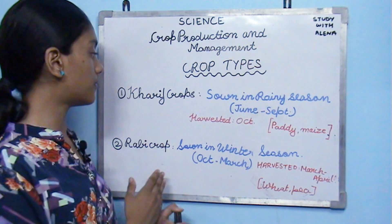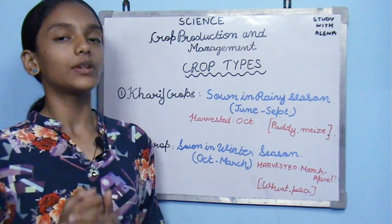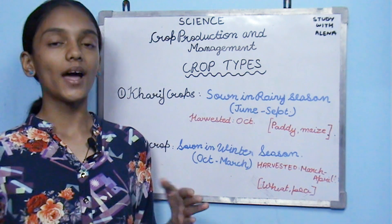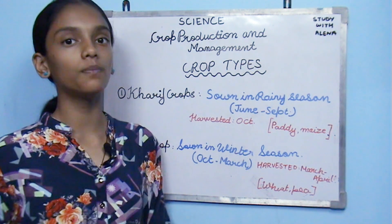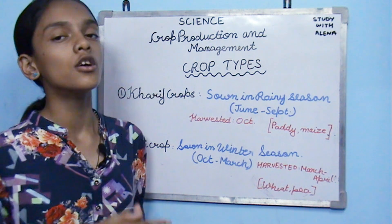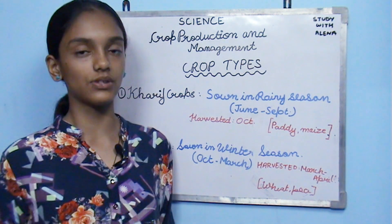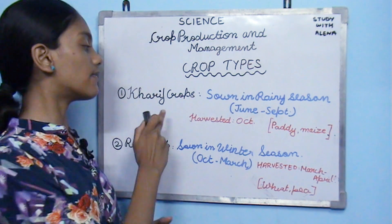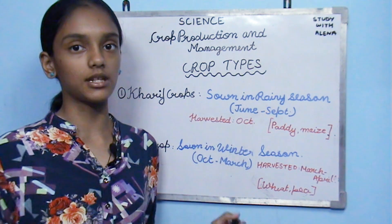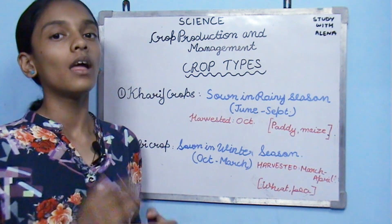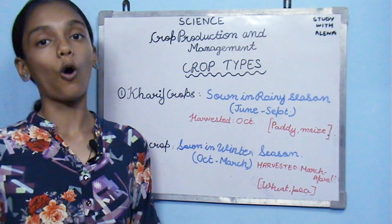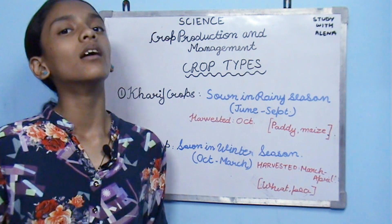Now let's learn about crop types. We have two main crop types: Kharif crop and Rabi crop. Note that the NCERT calls these crop patterns, but that is incorrect — crop pattern is something else. Kharif crops are grown in the rainy season from June to September and are harvested around October. Examples include paddy, maize, and soybean.